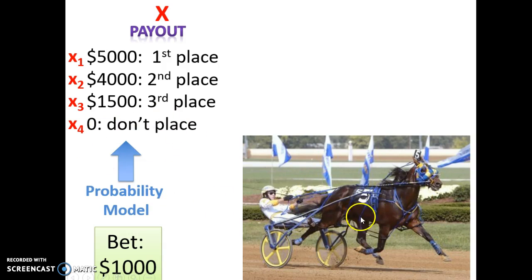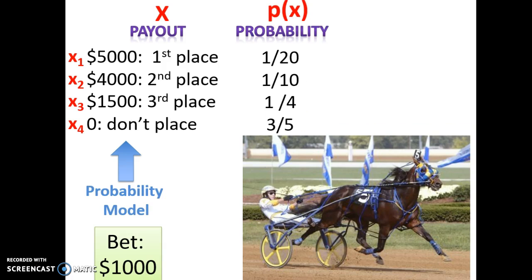So if the one he bets on, he loved betting on the number 5, comes in first place, he gets $5,000. If it comes in second, $4,000. Third, $1,500. And if it doesn't place, he just gets $0 and basically loses $1,000. The rest of the probability model is going to give us a probability of each of these possible events.